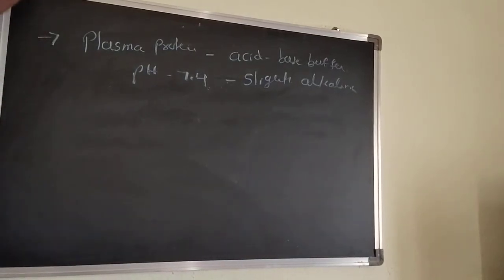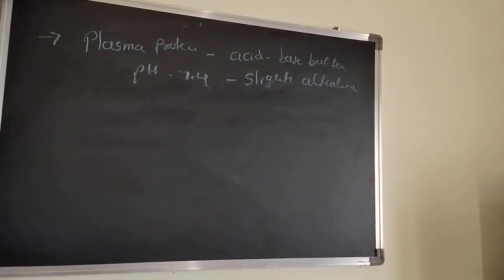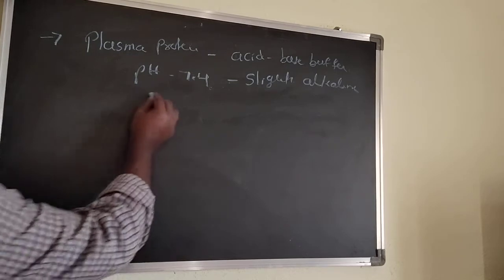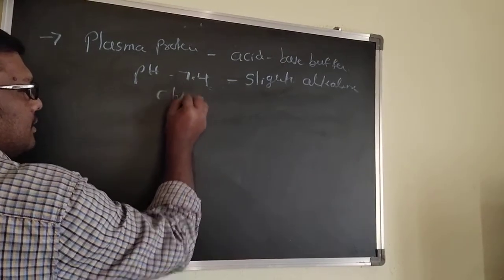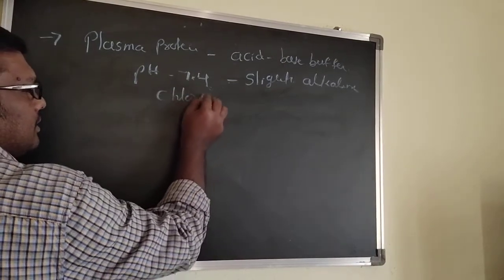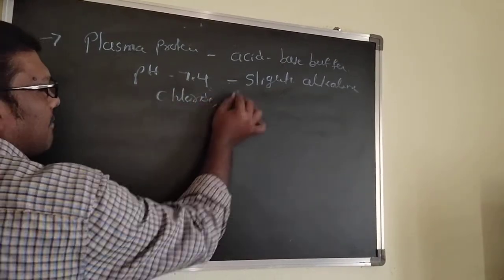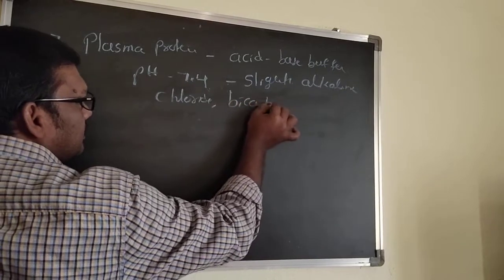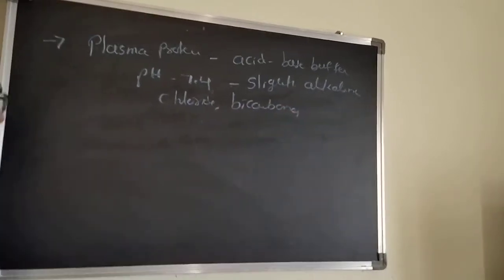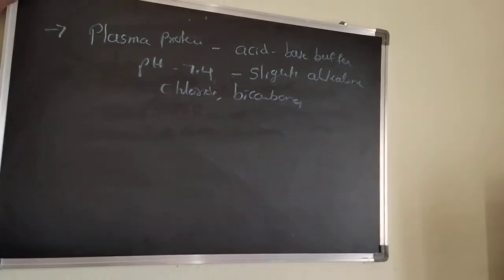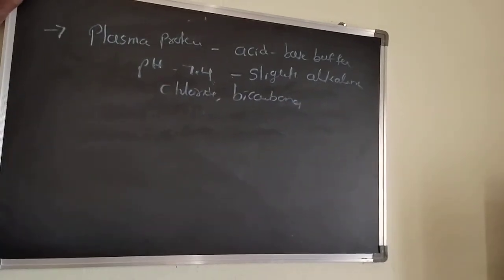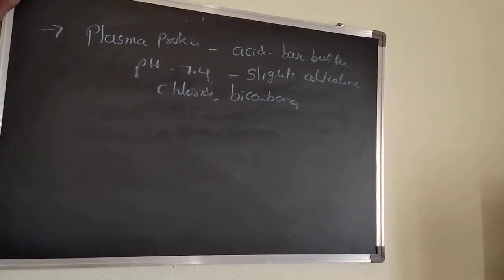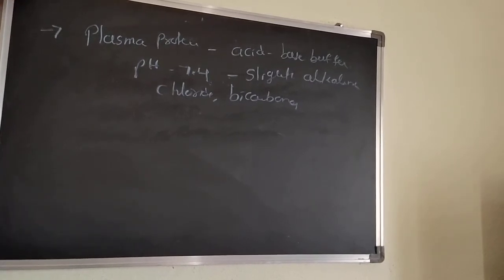Salts are also present in the plasma. The salts present are chlorides, bicarbonates, and phosphates such as sodium phosphate and potassium phosphate.